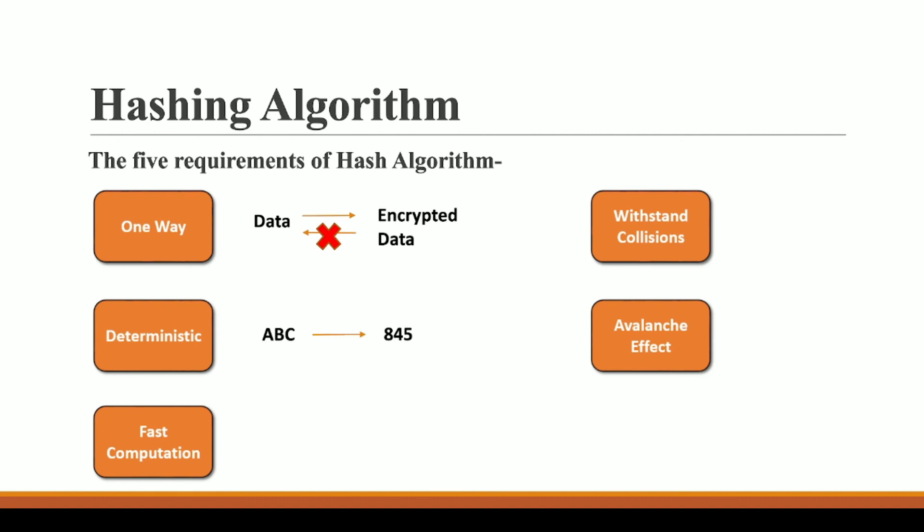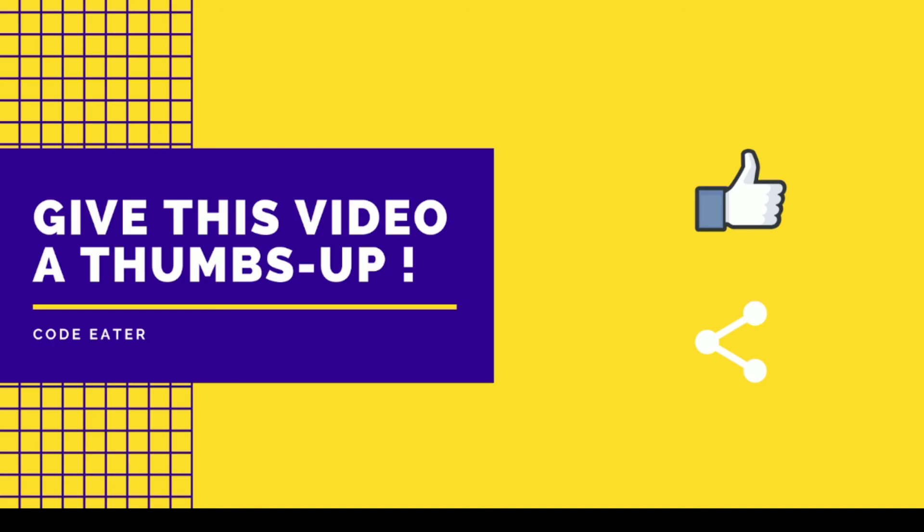Fifth is the avalanche effect. As we saw in the SHA-256 generator, even changing a single character — from 'H' to 'HA' — produces a completely new hash. Every single small change in the input results in a completely different hash. I hope you enjoyed this video; if you have any doubts please comment below.